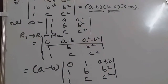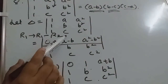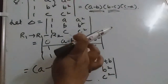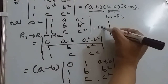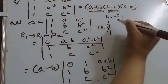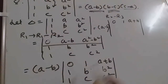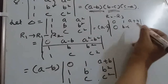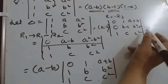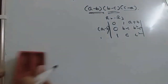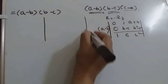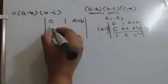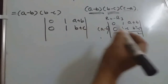Now for the second bracket B minus C, the operation to do is R2 minus R3. If you know the concept, two operations can be done simultaneously — here also you can write R2 = R2 minus R3. Next operation is R2 minus R3, and R2 is changing. We already got one bracket A minus B. First row is same: 0, 1, A plus B. Then 1 minus 1 gives 0, B minus C, B squared minus C squared, and last row is 1, C, C squared.